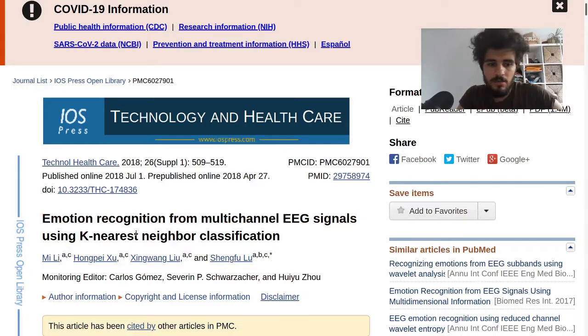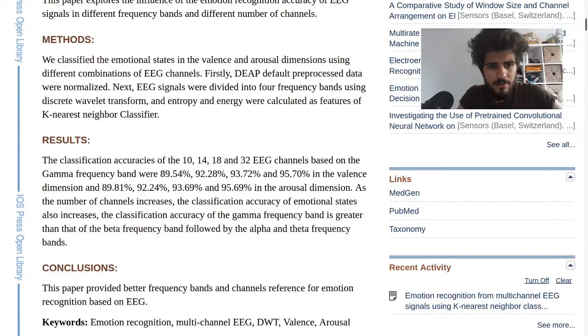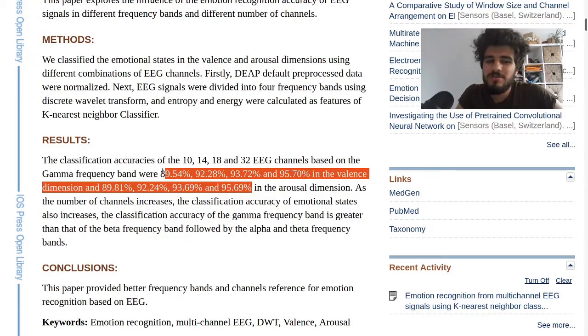So this paper is emotion recognition from multi-channel EEG. There's nothing wrong with using EEG or multi-channel, it's how they validated their model that's actually learning something about emotion that is problematic. They have 99% accuracy, 89%, 92%, 93%, 95%. I'm almost certain that this is a badly overfitted model.